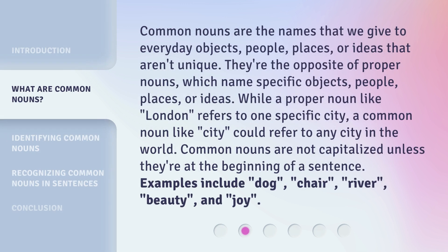Common nouns are the names that we give to everyday objects, people, places, or ideas that aren't unique. They're the opposite of proper nouns, which name specific objects, people, places, or ideas.